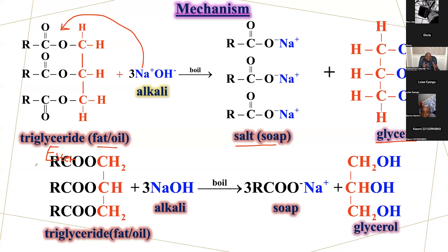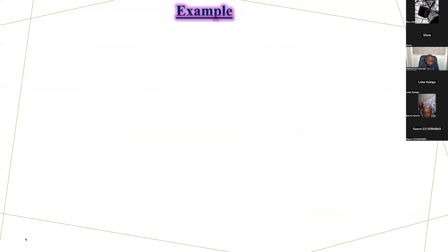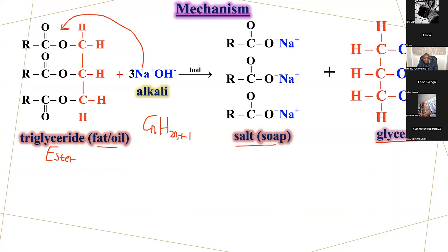R is any alkyl group. An alkyl group is anything with the formula CnH2n+1. So R stands for CnH2n+1.